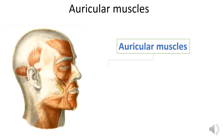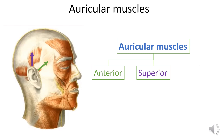Auricular muscles in humans are poorly developed. Three are distinguished: the anterior muscle, superior muscle, and posterior muscle. They can only provide movement of the auricle in some people.